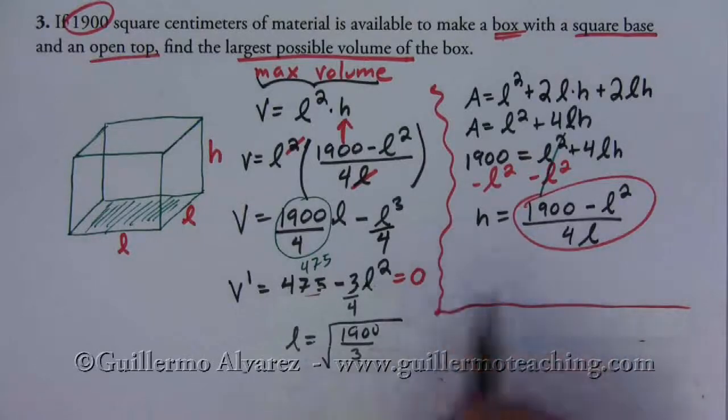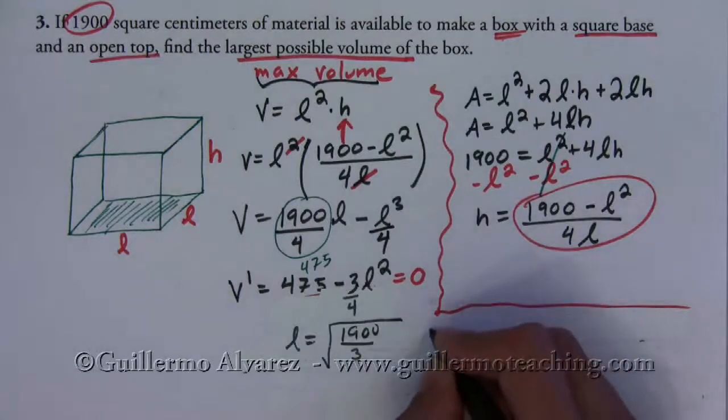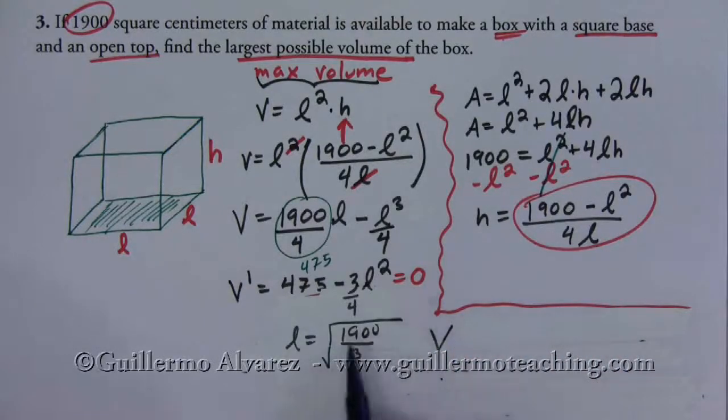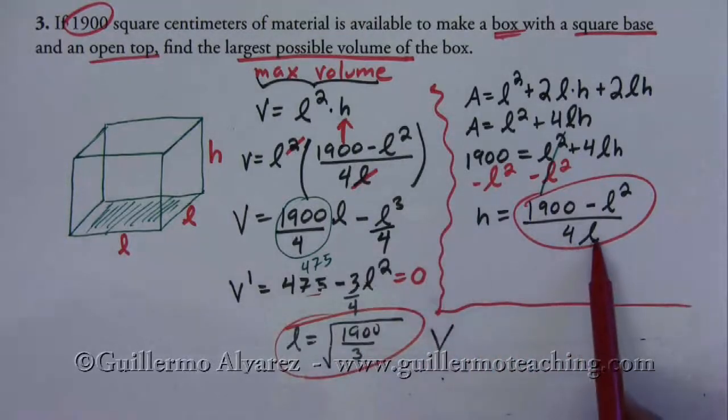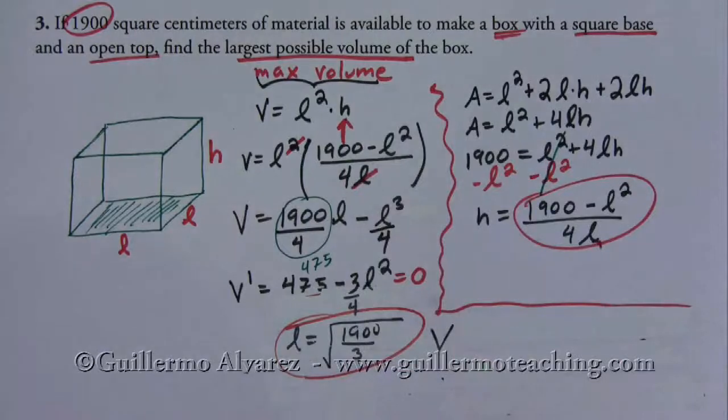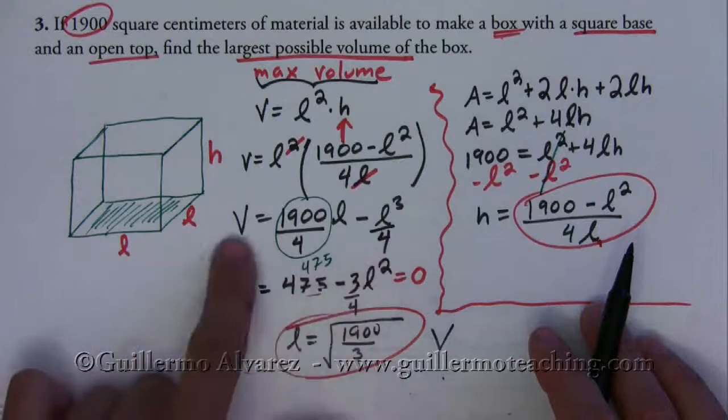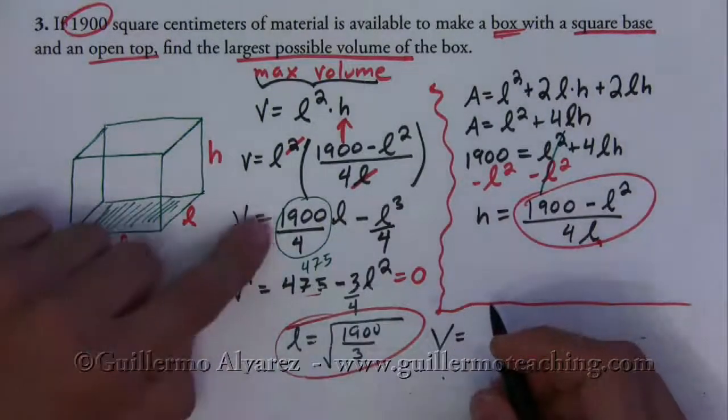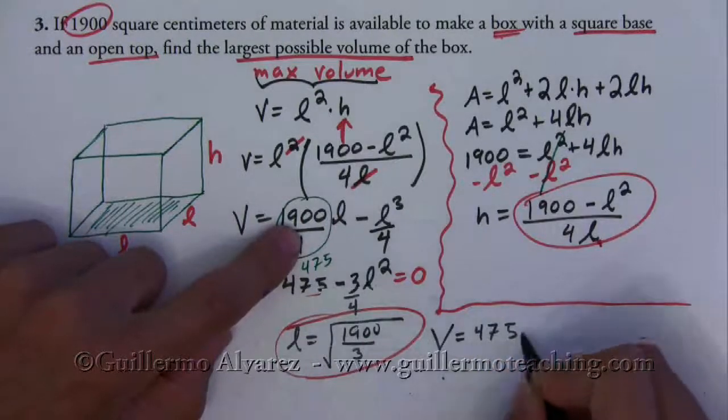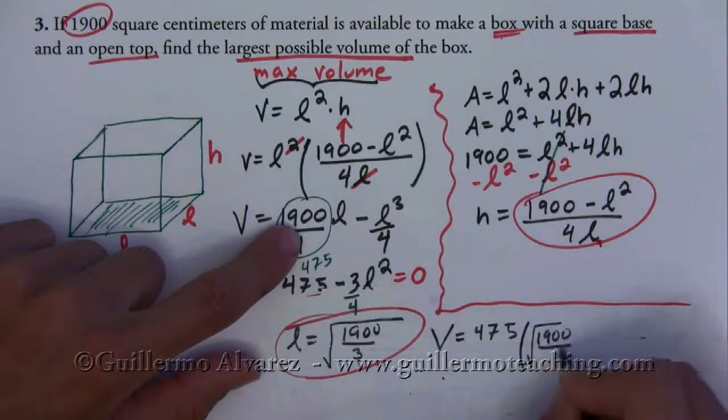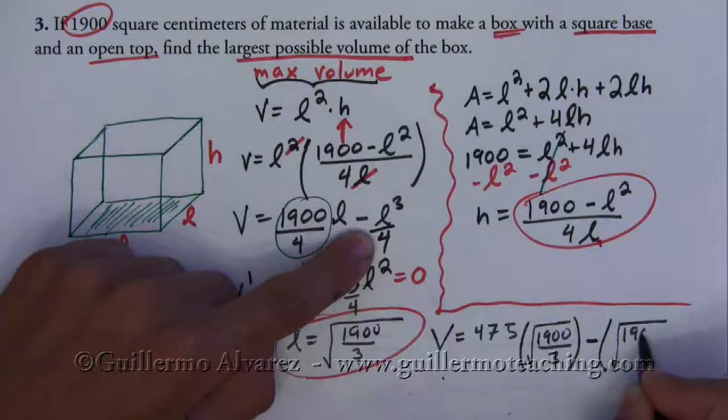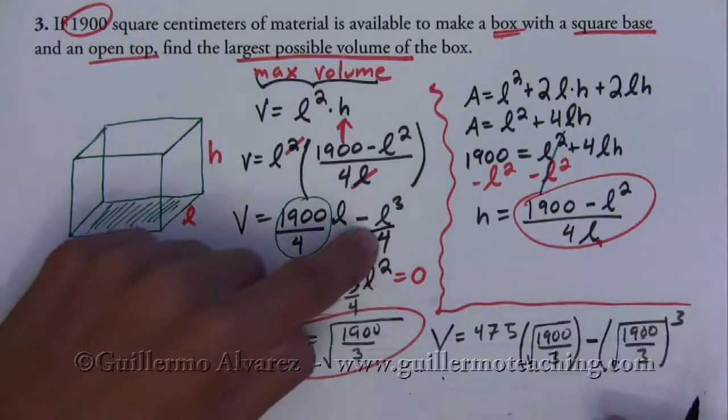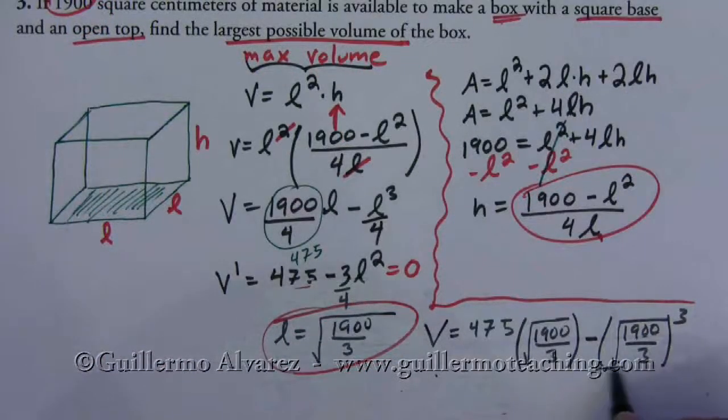Now here what I'm looking for is not the length that gives me the maximum volume but the actual maximum volume itself. And to do that, you can if you want plug this length into this formula to find h and then plug both of those into that formula, but I already have a simplified formula for the volume involving just l so I'm just going to use that one. So what I have is 475 times the square root of 1900 over 3 minus the square root of 1900 over 3 cubed, this guy divided by 4.